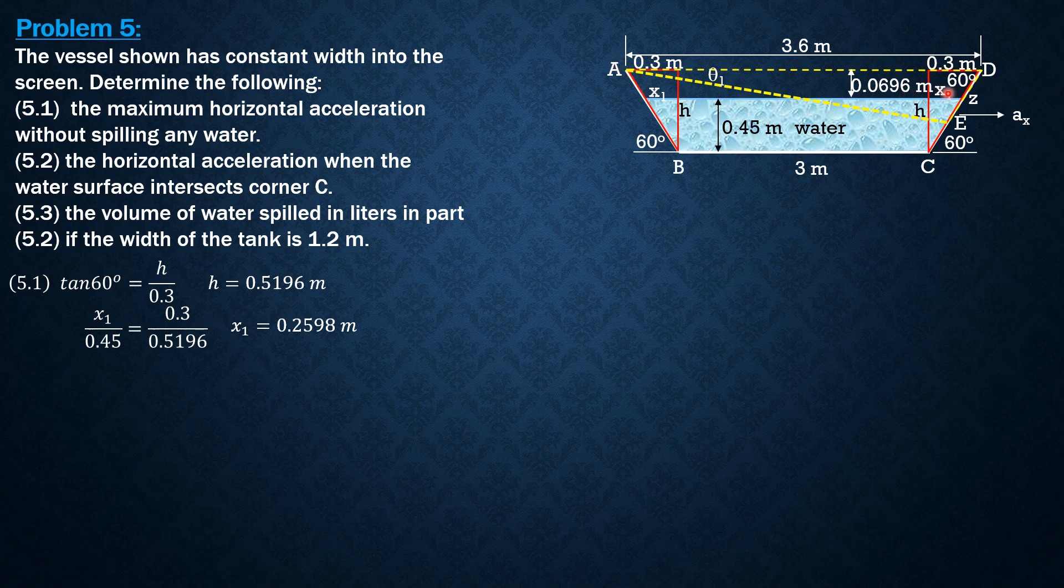area initial of air, because no liquid is spilled, equals final area of air. The initial area of air is one half of quantity 3.6 plus the width of the surface which is 3 plus 2 times x₁, so 3 plus 2 times 0.2598, times the height of this trapezoidal section filled with air 0.0696 equals final area of air which is one half of 3.6 times Z times sine of 60, so we can solve for Z.